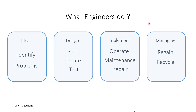What do engineers do? As human beings we have ideas. Using these, we can identify the problems, and the next step is to design it — planning, creativity — and that design has to be implemented. We call it operation, maintenance and repairing, and also it is our responsibility to manage it. Managing involves regaining and recycling.